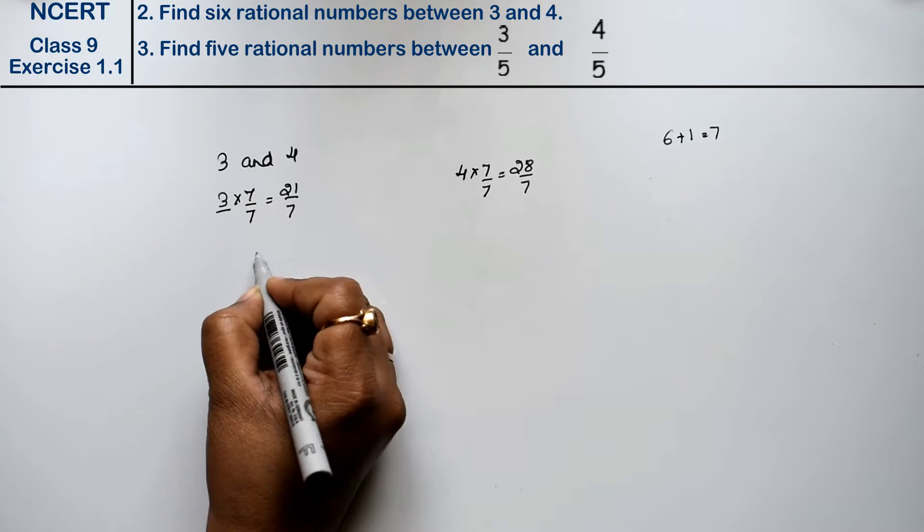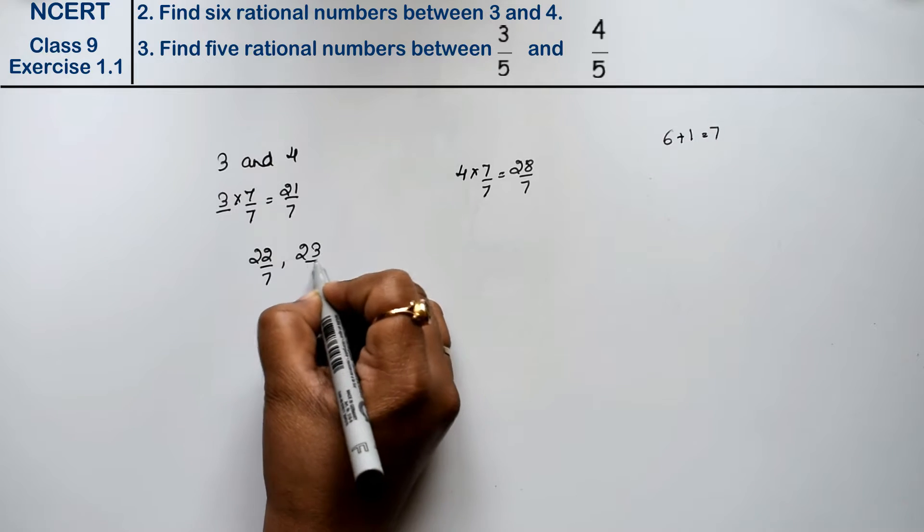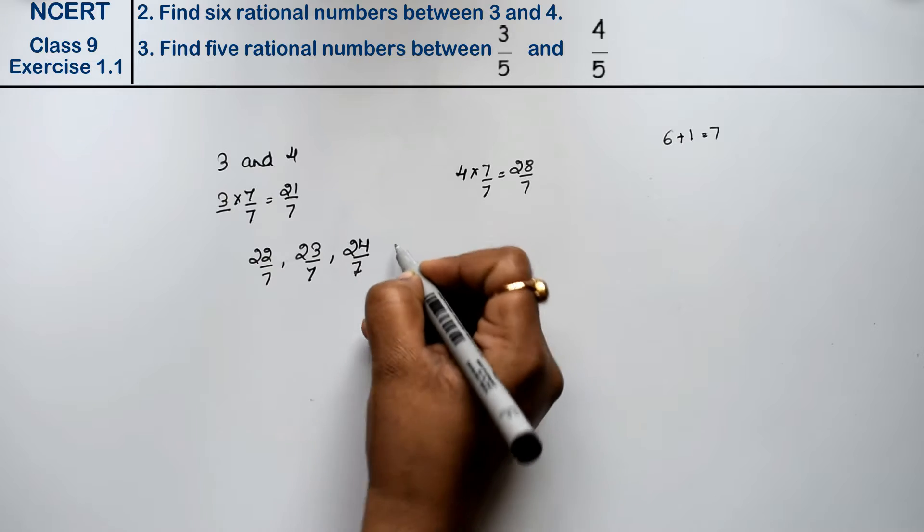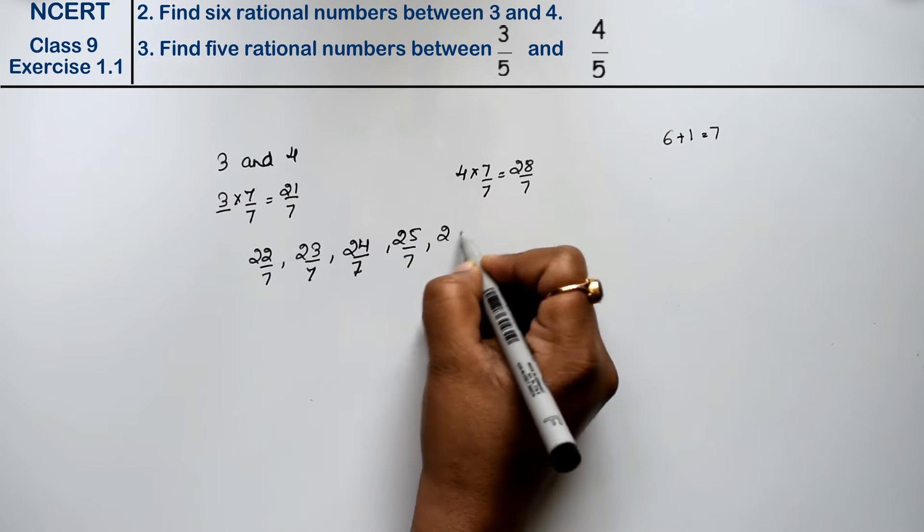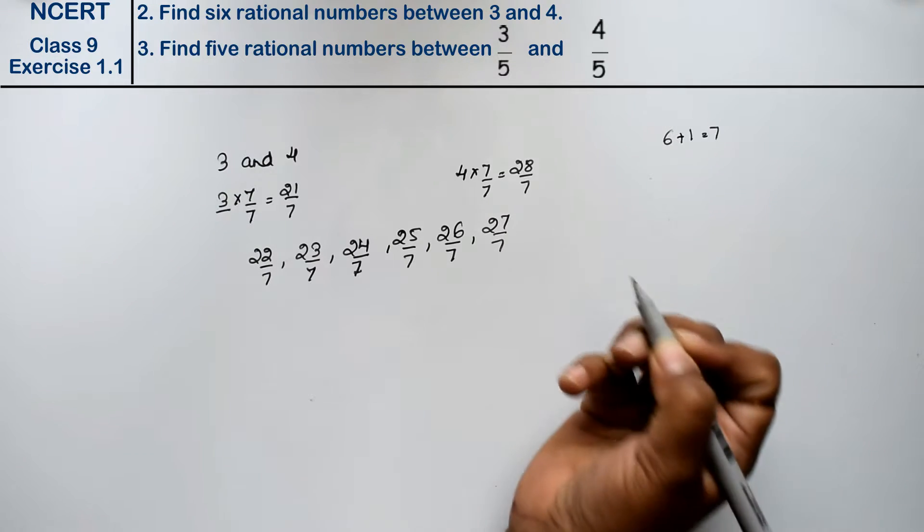Now write between these numbers. That is 22 upon 7, 23 upon 7, 24 upon 7, 25 upon 7, 26 upon 7, 27 upon 7 is the answer.